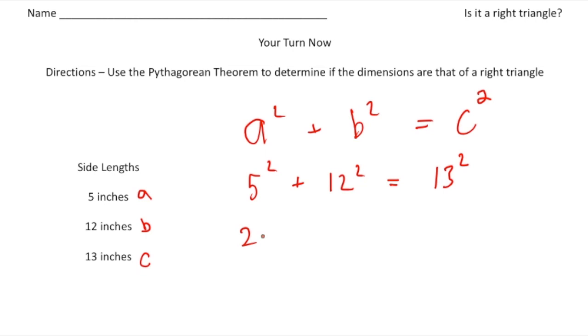And that's going to be 25 plus 144 equals 169. And 25 plus 144 is indeed 169. So because 169 equals 169, yes, this is absolutely a right triangle. All right. How'd you do?